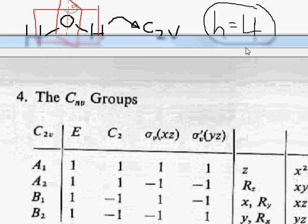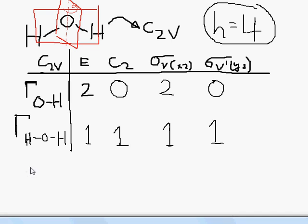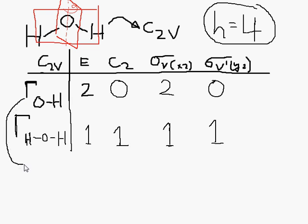Okay. So it's pretty easy to see. You have two plus zero plus two plus zero. Two, zero, two, zero.